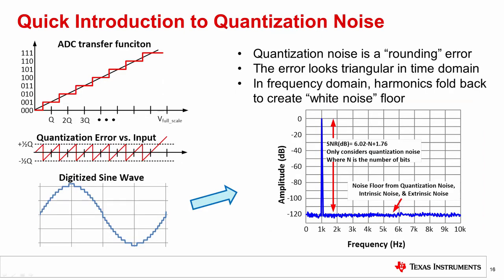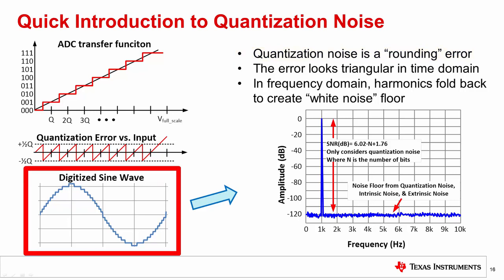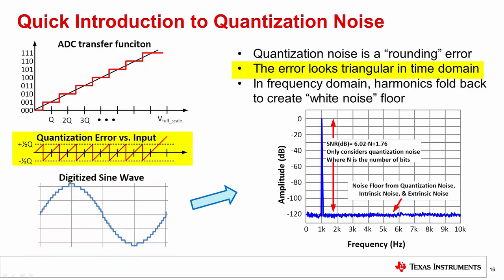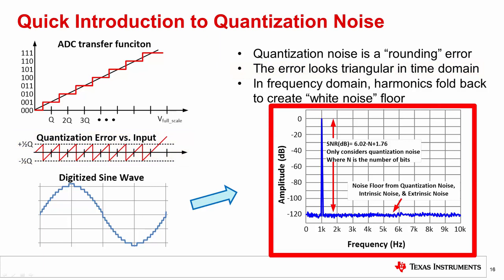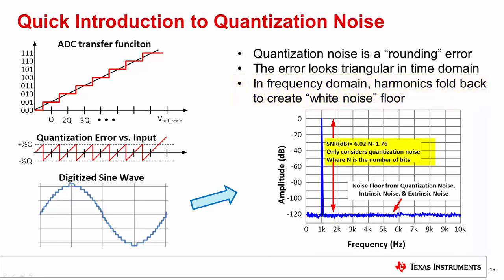First, let's discuss the concept of quantization noise. All data converters round the analog input signal to discrete digital levels — this is called quantizing the signal, and the associated error is called quantization error. If you apply an AC sine wave to an ADC, the resultant digitized waveform has an error resembling a sawtooth waveform. The FFT of that sawtooth produces harmonics across a wide frequency range that alias back into the Nyquist band, making the noise floor appear like white noise. The SNR due only to quantization noise is given by: SNR (dB) = 6.02 × n + 1.76, where n is the number of bits — applicable to a pure sinusoidal input.